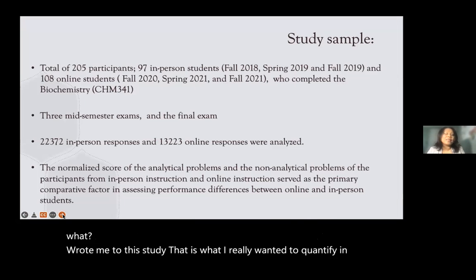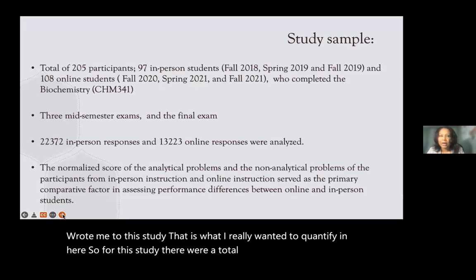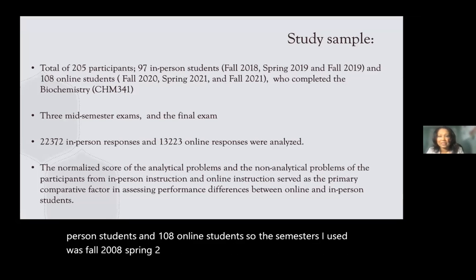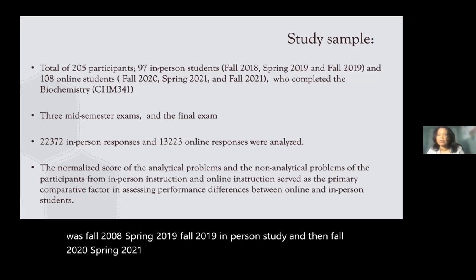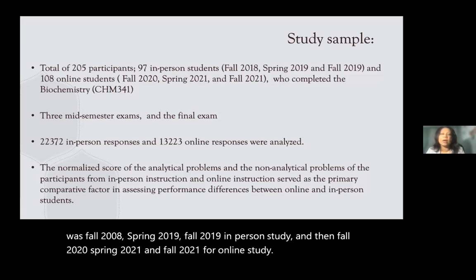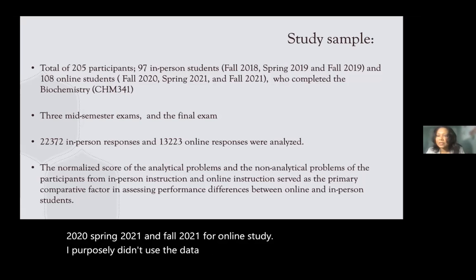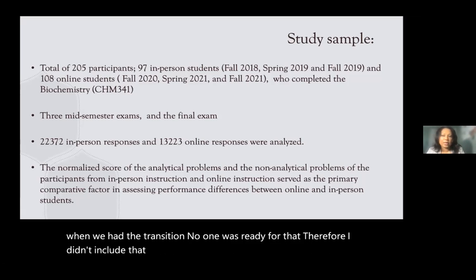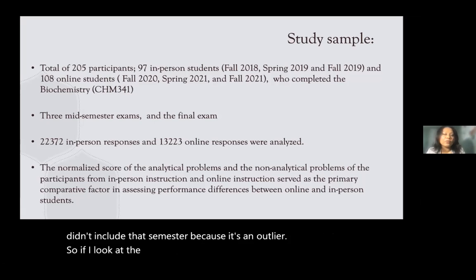The study had 205 participants total: 97 in-person and 108 online students. Semesters used were Fall 2018, Spring 2019, and Fall 2019 for in-person, and Fall 2020, Spring 2021, and Fall 2021 for online. I purposely excluded Spring 2020 because that was the transition semester — no one was ready — so it was treated as an outlier.